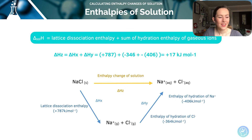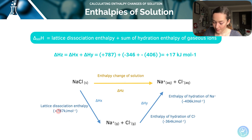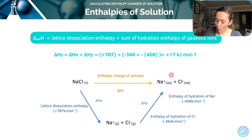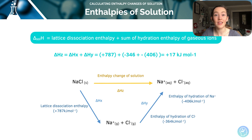Let's put the numbers in. Delta H Z is equal to plus 787, plus minus 364, plus minus 406. I don't need to double any of those values, because they're all in their one-molar quantities — they all fit with the definition. So if I add all those together, I get my enthalpy change of solution, and it is plus 17 kilojoules per mole. You must remember to add the enthalpy values for the hydration of both of your ions — don't just do one of them.